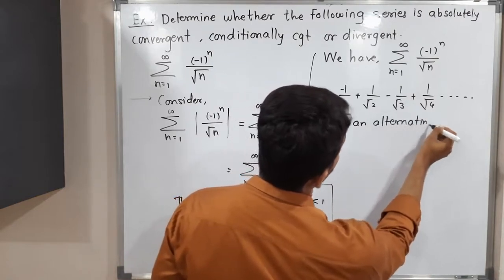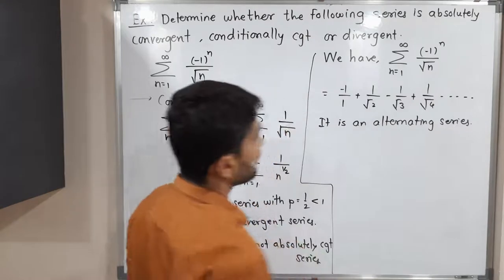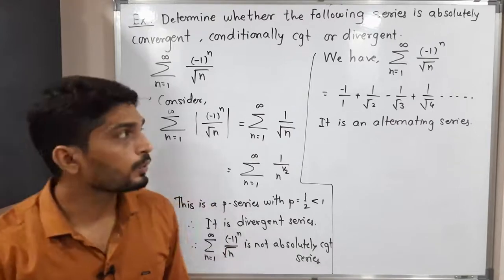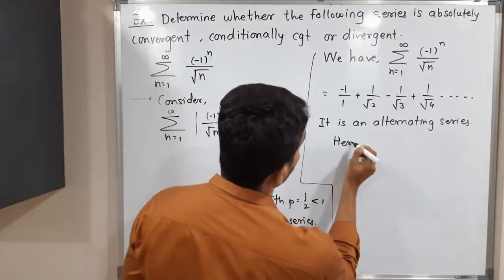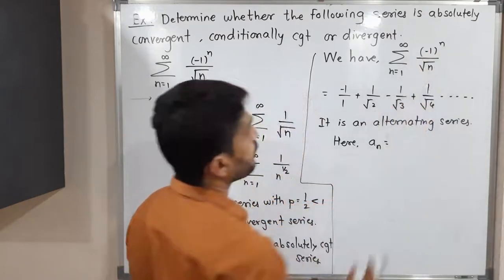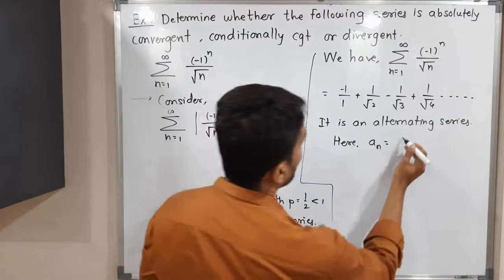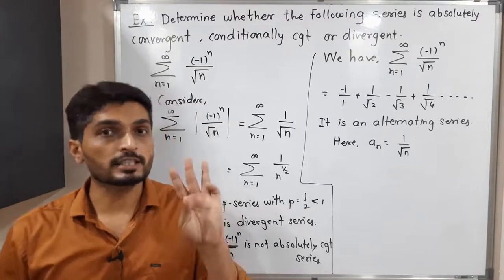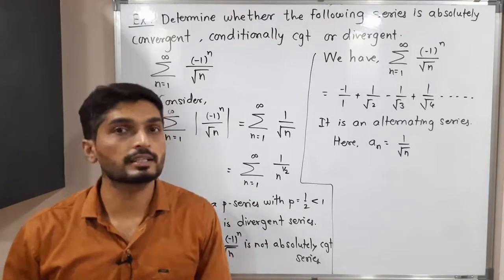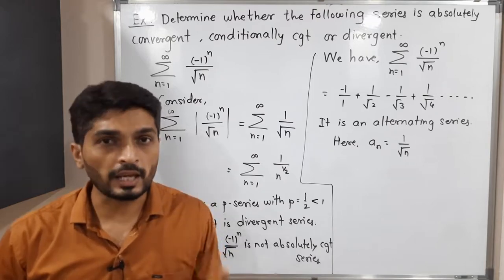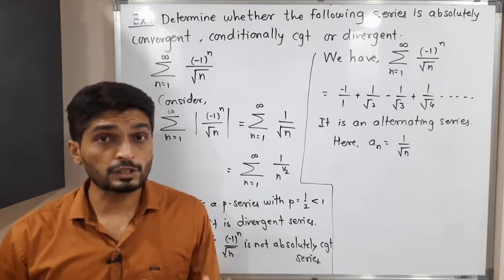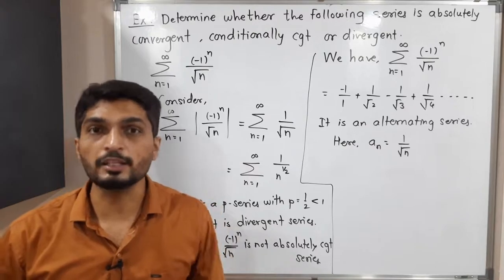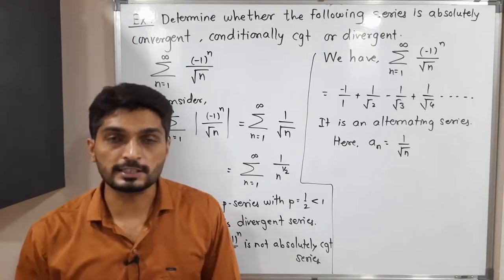For alternating series, we have the Leibniz theorem to check whether it is convergent. Here a_n — the multiple of (-1)^n — is 1/√n. For the Leibniz theorem, a_n must satisfy three conditions: first, a_n must be positive; second, a_n must be a monotonically decreasing sequence; third, the limit of a_n must be 0.